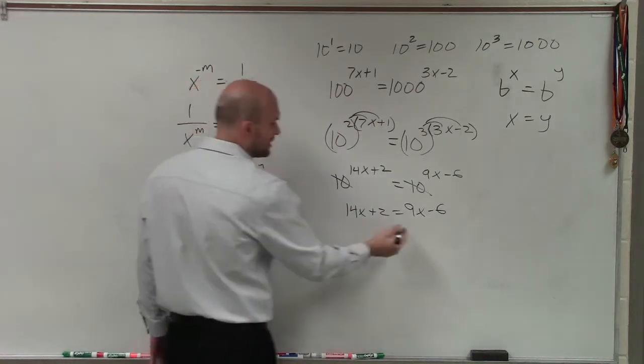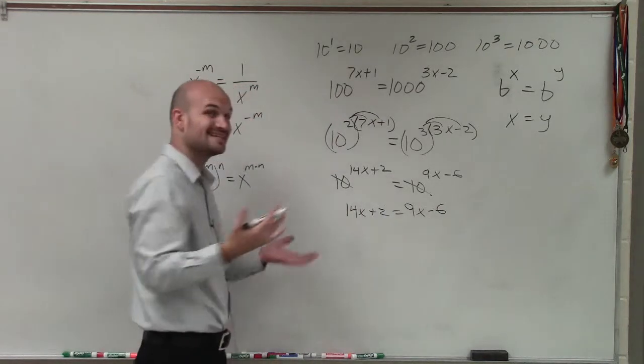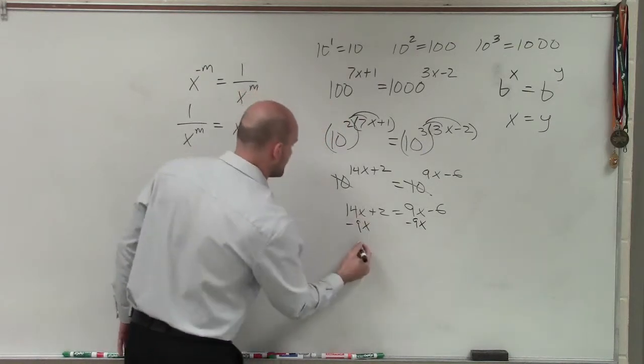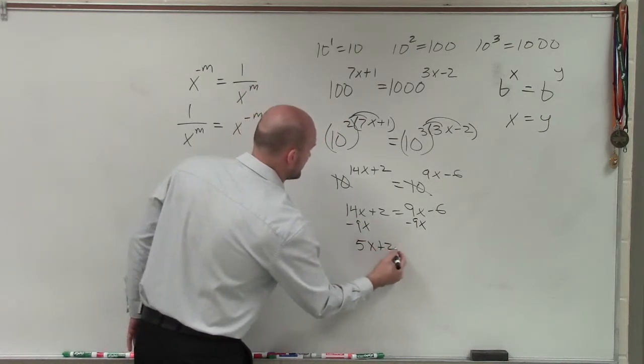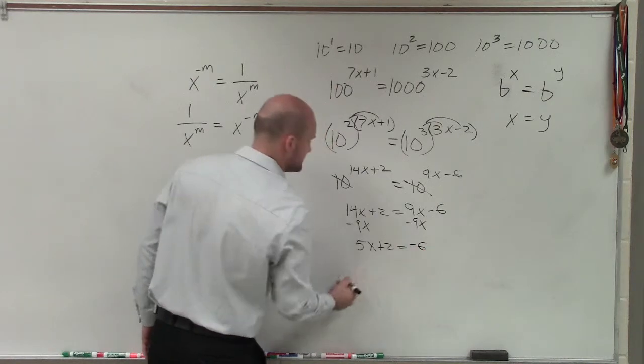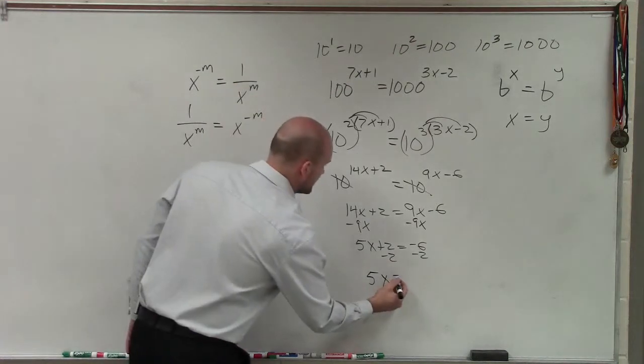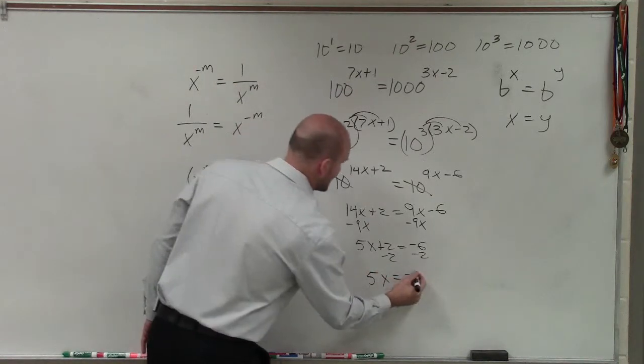And now I just simply solve. Since I have a variable on both sides, I need to get my variables to one side. I'll subtract 9x on both sides. Therefore, this becomes 5x plus 2 equals negative 6. Subtract 2, I get 5x equals negative 8.